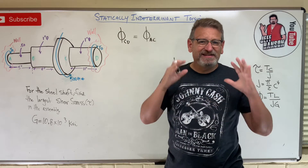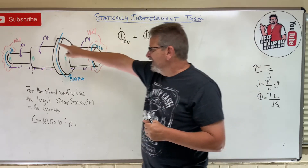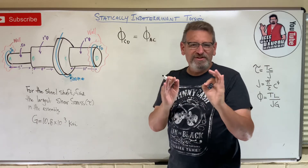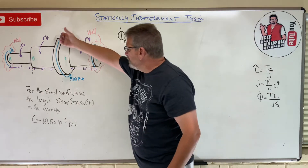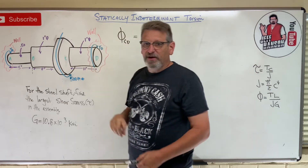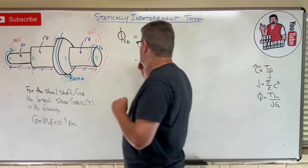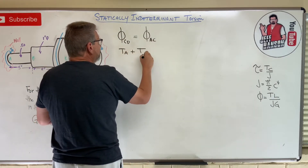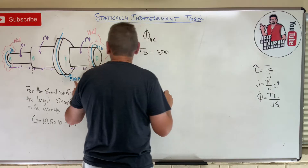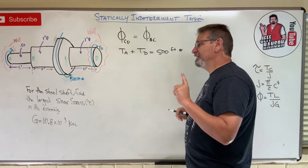There's one more thing — a global equilibrium look. We have reaction torques TA and TD at the walls. If the 500 ft-lb torque rotates one way, the walls have to prevent that and react in the opposite direction on both ends. So we get one more equation: TA plus TD has to equal 500. Be careful, because this is in foot-pounds and everything else is in inches.